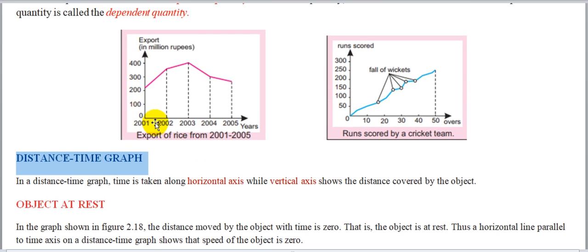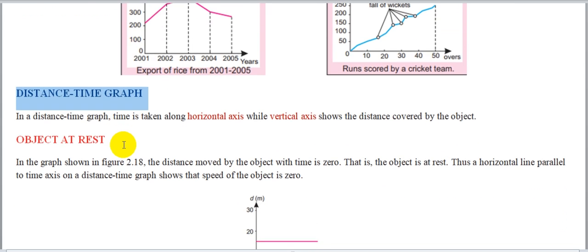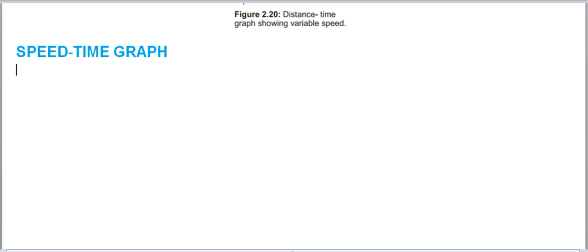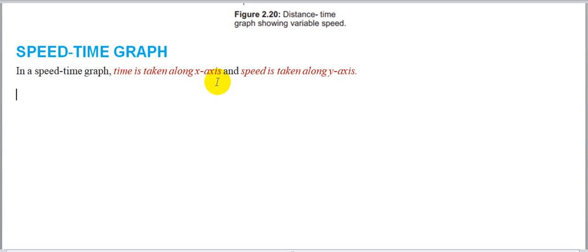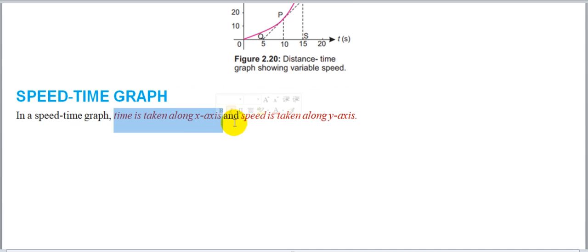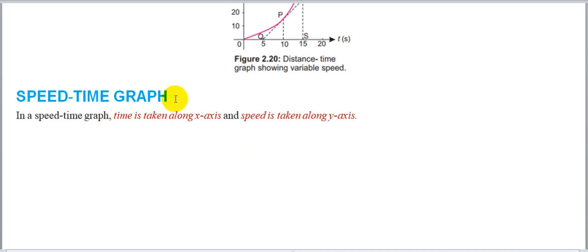اب اگر y axis کے along distance کی بجائے speed consider کریں تو graph کی nature change ہو جائے گی — اسے ہم speed time graph کہیں گے۔ Speed time graph means: in a speed time graph, time is taken along x axis and speed is taken along y axis۔ Speed time graph کے بھی تین طرح کے cases ہیں: object moving with constant speed، object moving with variable speed، اور distance traveled by object۔